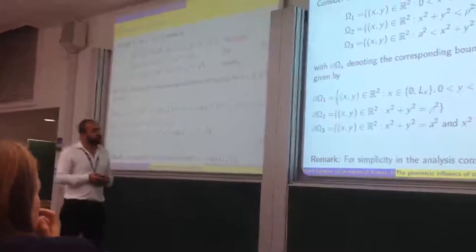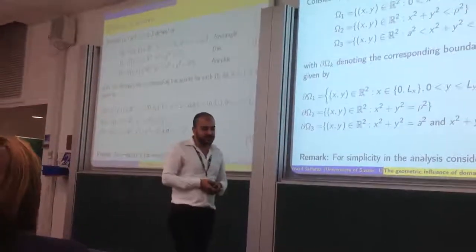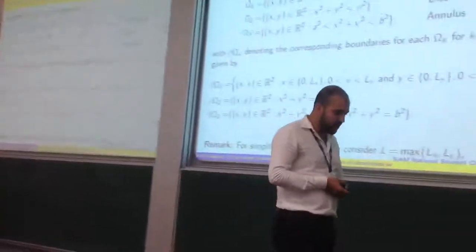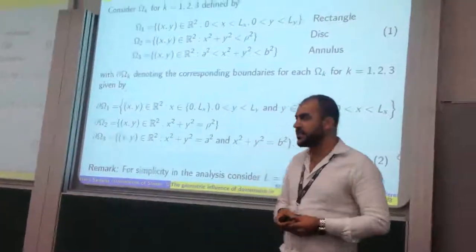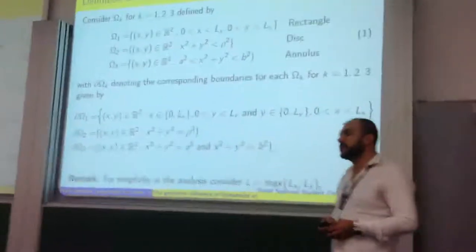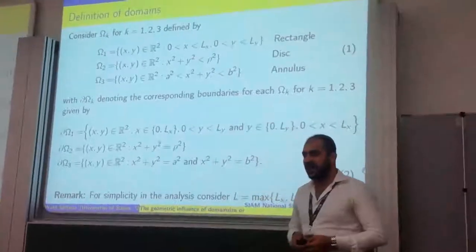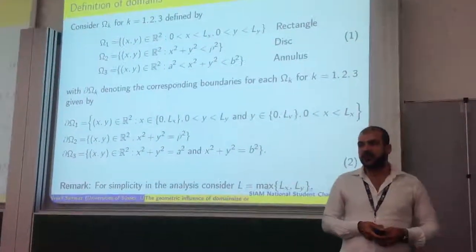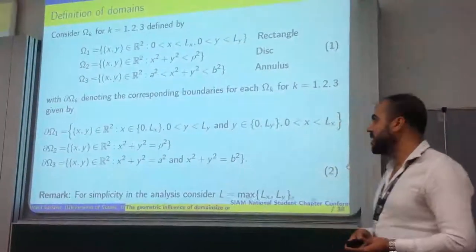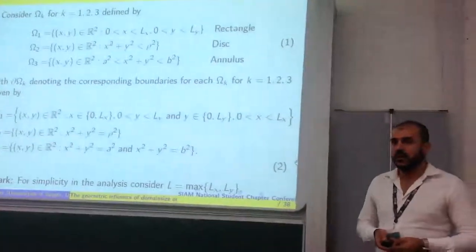These are the three different types of geometries — all of them 2D geometries that I have looked at. One is the standard compact rectangular geometry. The second is a compact circular geometry, which is a disk-shaped domain. And the third is an annular region, which is non-compact. That has some consequences for the analytical derivation of the spectrum, as well as the bifurcation results for the Turing pattern.